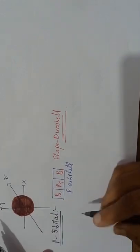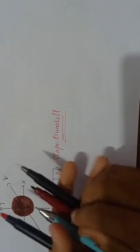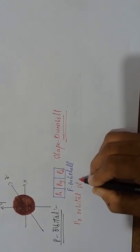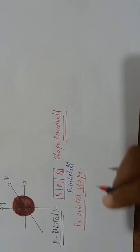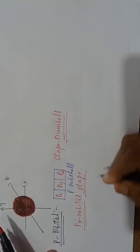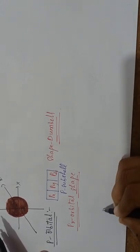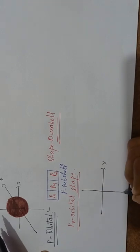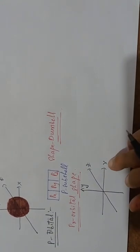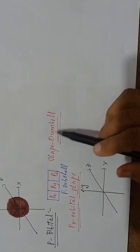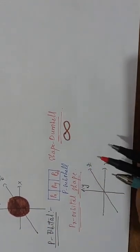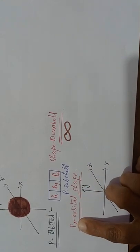This is the PX orbital. I am taking the XYZ Cartesian axes. This is the X axis, this is the Y axis, and this one is the Z axis. PX orbital shape — its shape is dumbbell shape. PX orbital means along the X axis, the dumbbell shape will be there.